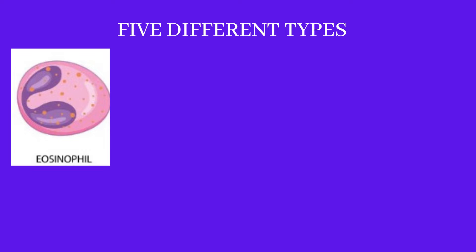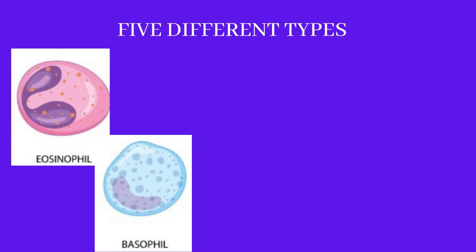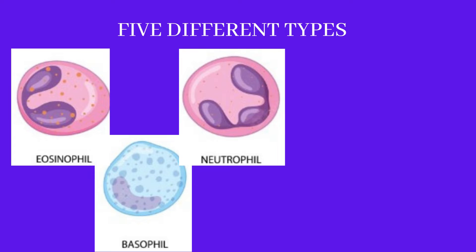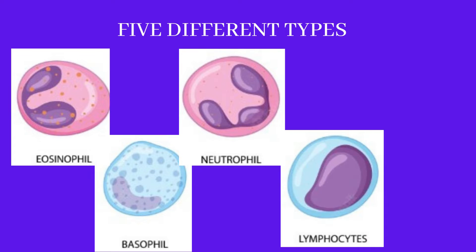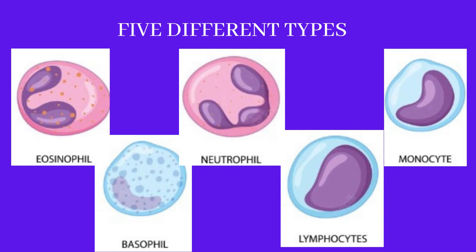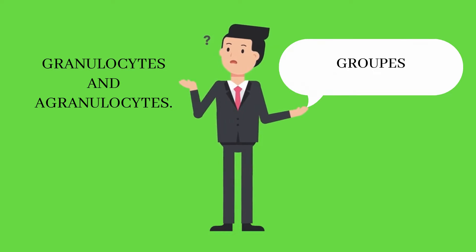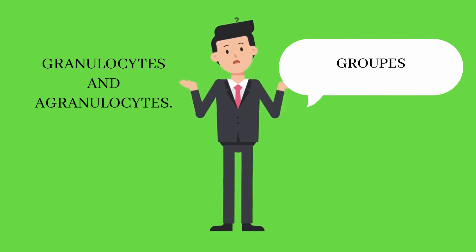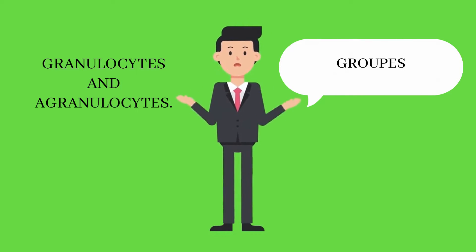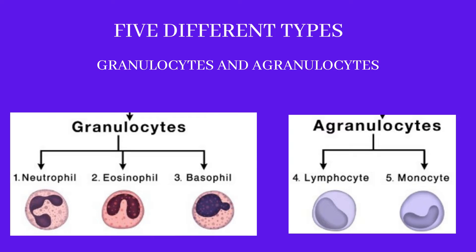The five different types of white blood cells are: eosinophil, basophil, neutrophil, lymphocyte, and monocyte. As you can see, in all these types the shape of the nucleus is different. We can divide these five types into two groups: granulocytes and agranulocytes.